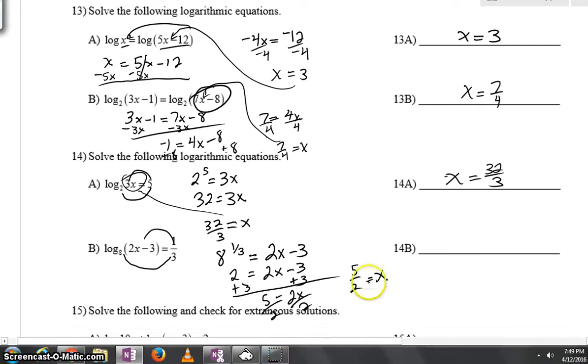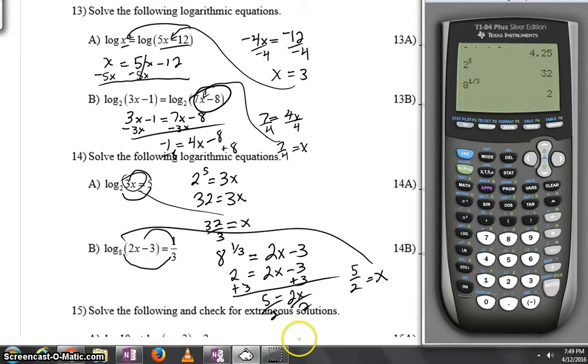Of course the big question is, is it okay to plug that inside of our log? Well the inside of the log is 2 times x so we could say 2 times 5 halves and then minus a 3. Let's see if we get something positive.